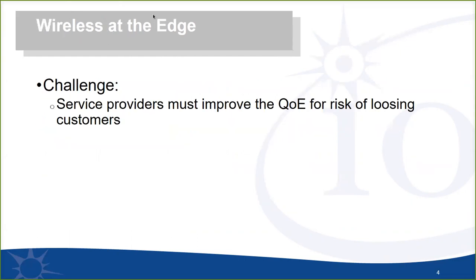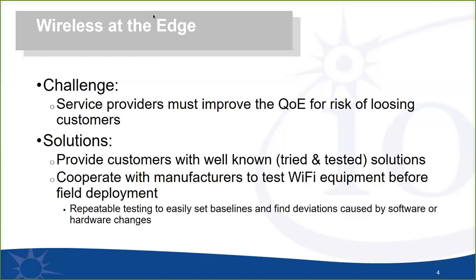The challenge faced is improving the quality of experience or running the risk of losing customers, customer churn, or having to deal with larger numbers of support calls in the field. All that can lead to spiraling costs. Having tried and trusted solutions can improve many experiences and avoid these issues before things get rolled out into deployments. Having an environment where we can cooperate between manufacturers, service providers, and test labs to provide an apples-to-apples comparison mechanism and repeatable testing can hugely reduce the challenge of improving that quality of experience.